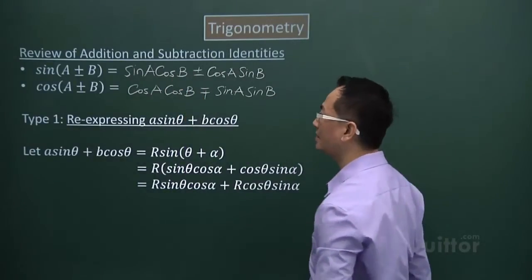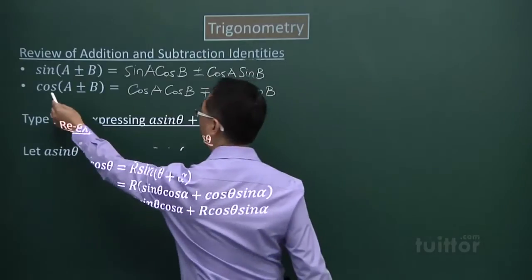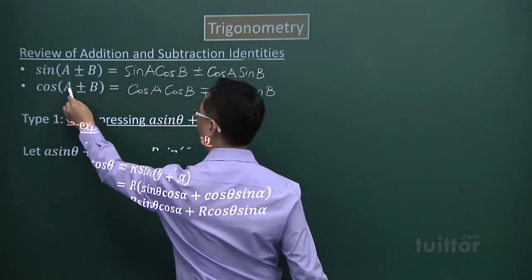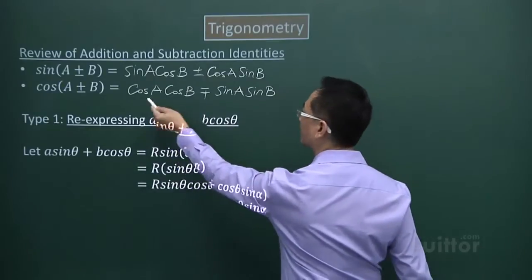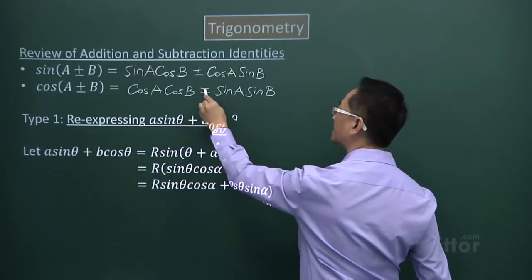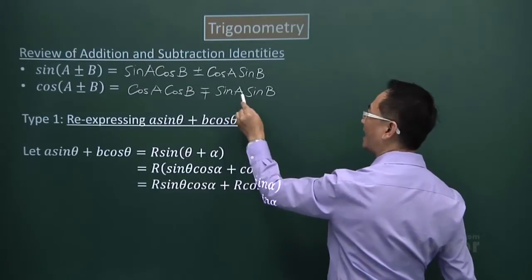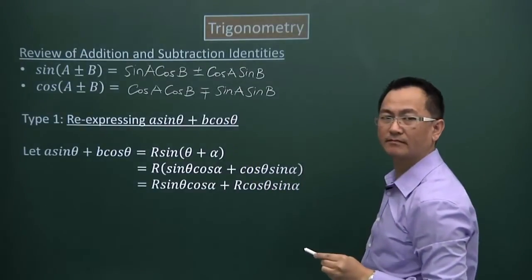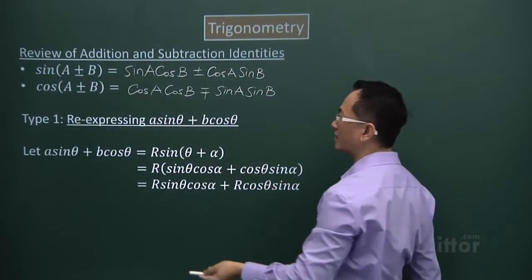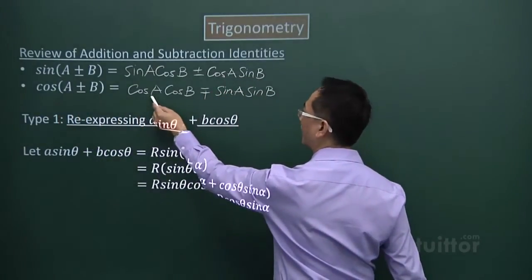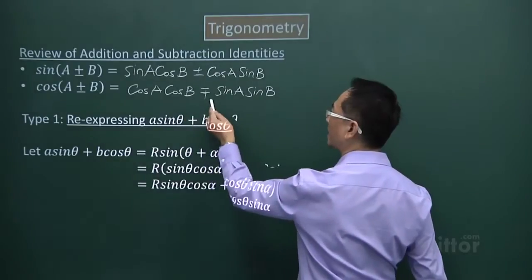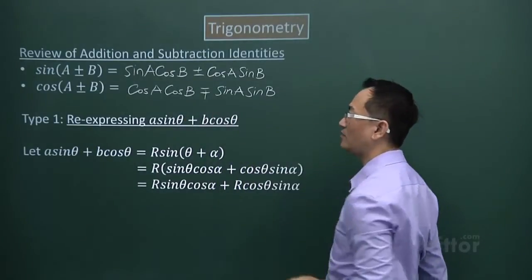As for the next identity, if I have cos(A + B), then I will have cosA cosB minus sinA sinB. Then the last one of course is cos(A - B), I will have cosA cosB plus sinA sinB.